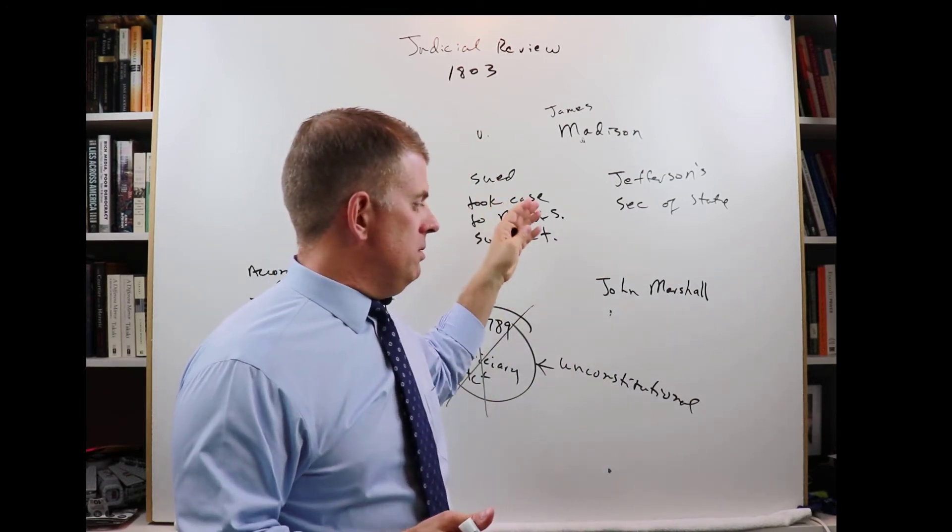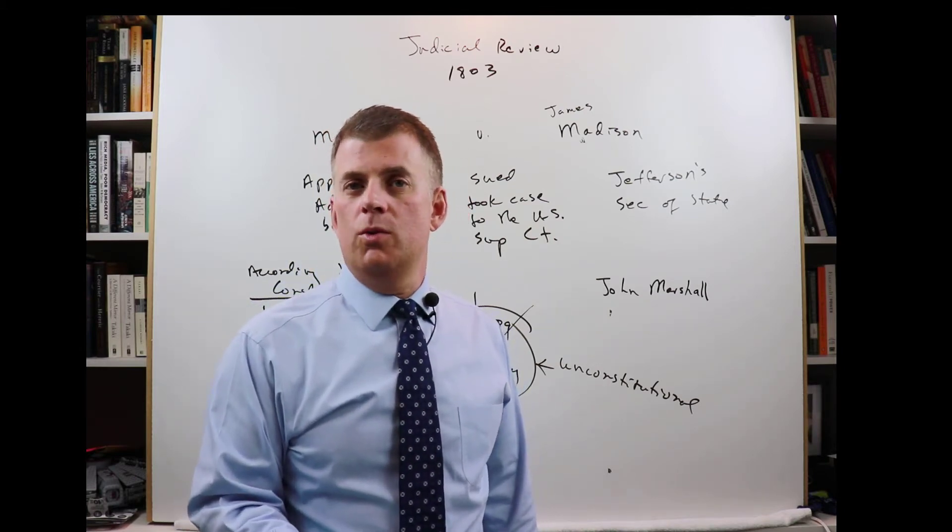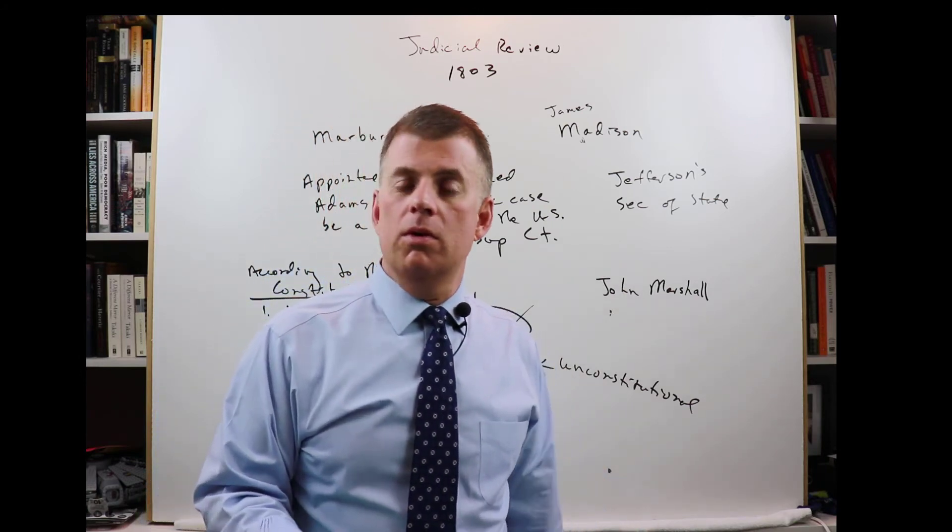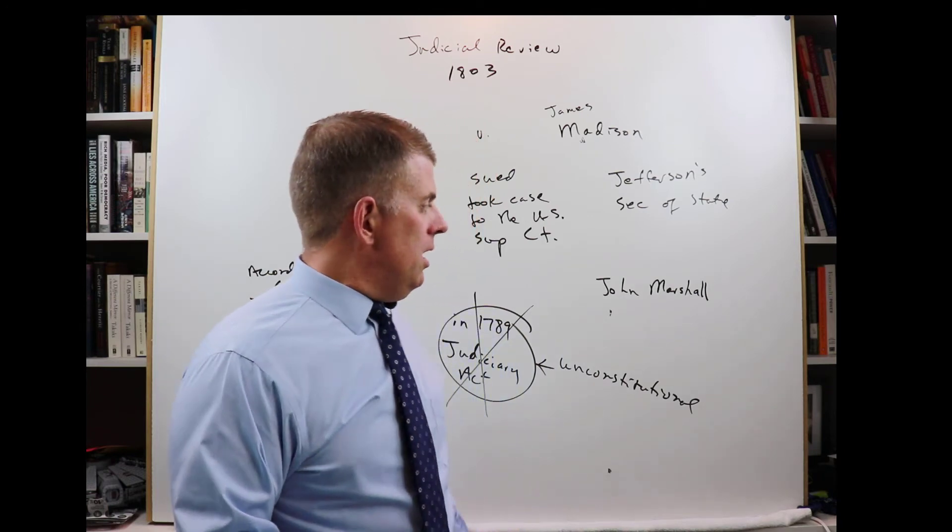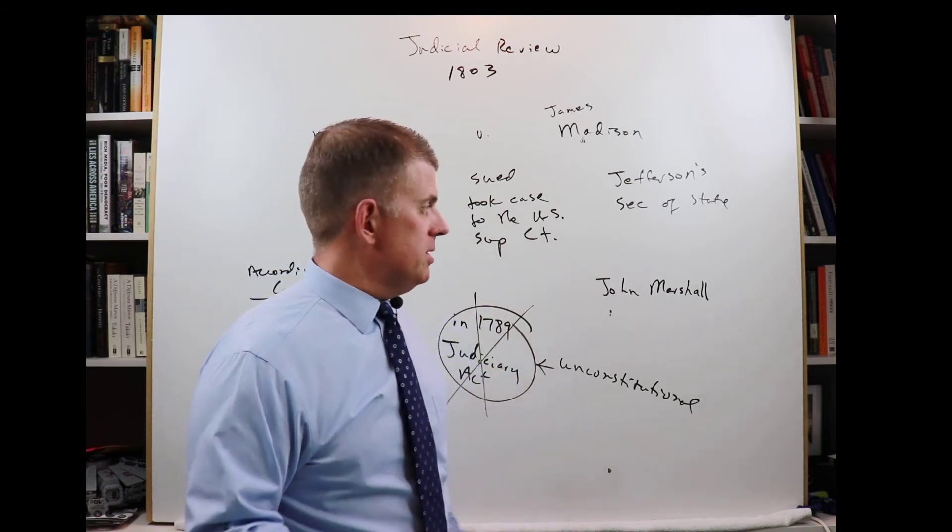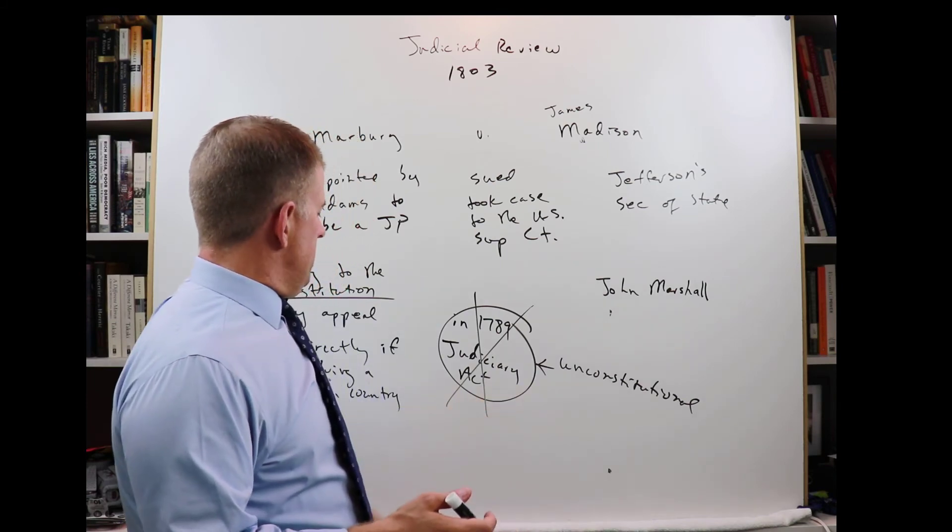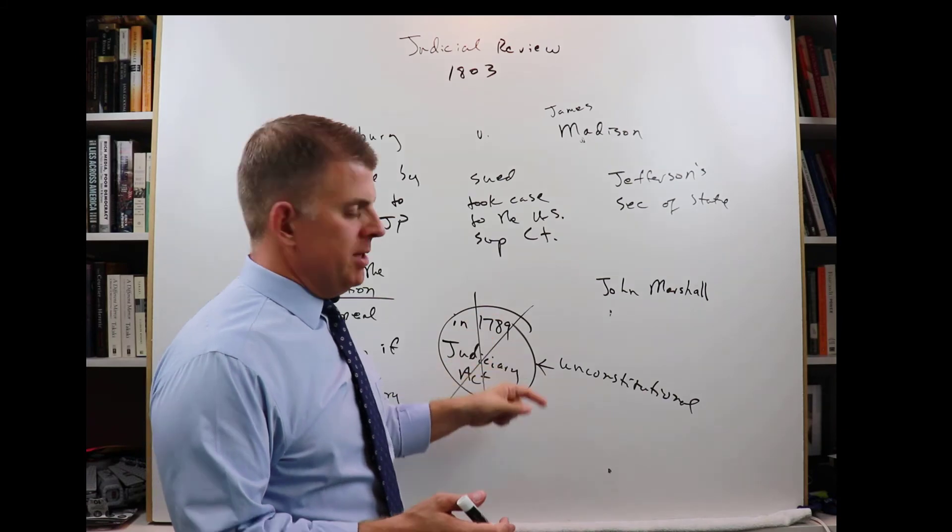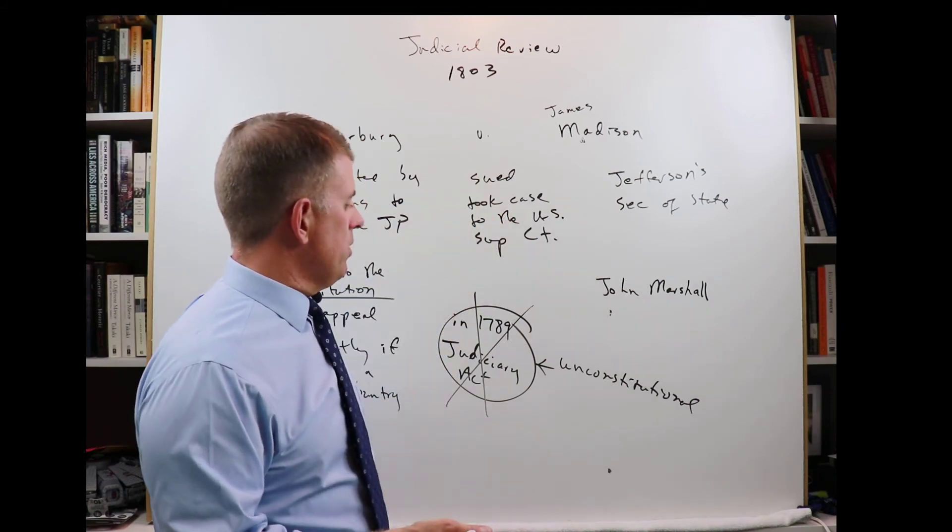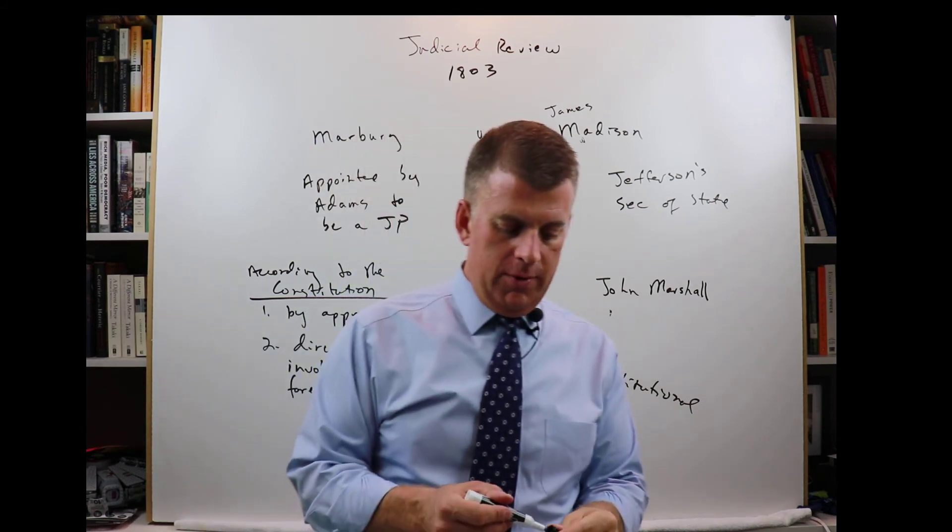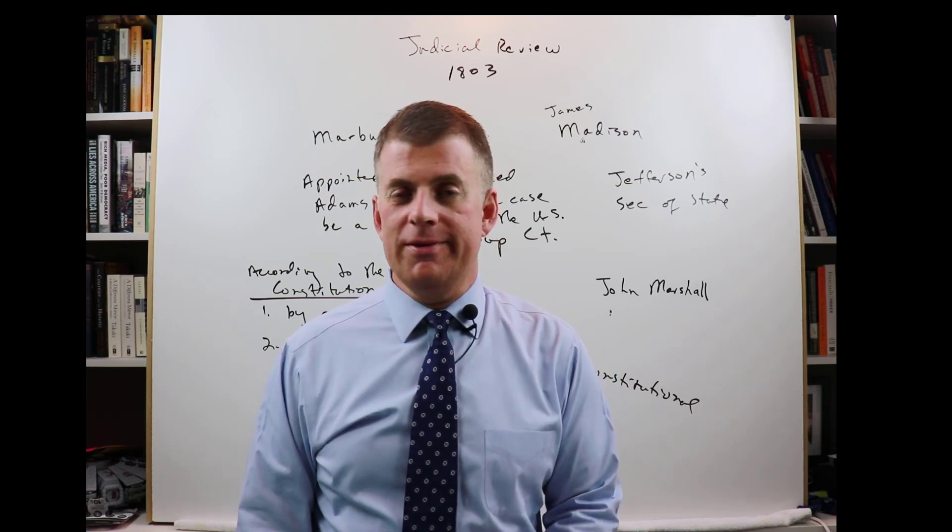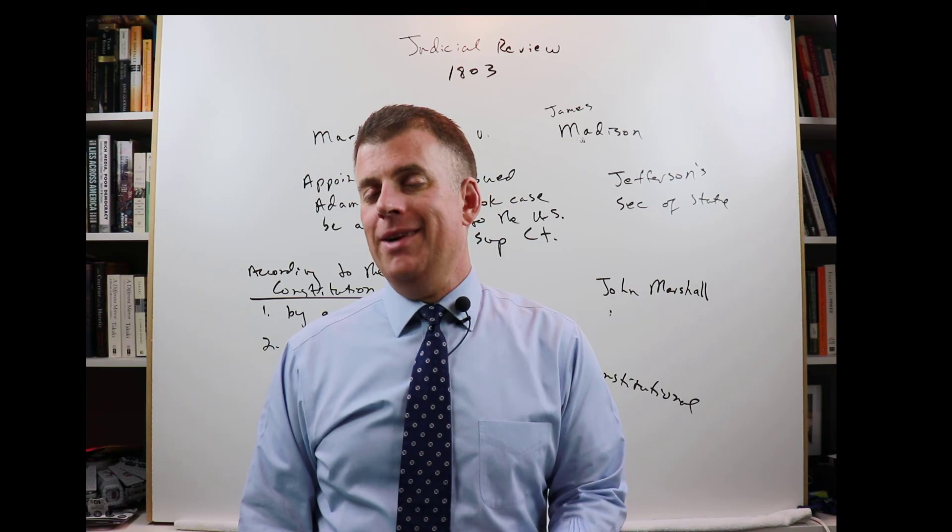So this is where judicial review came from. Before this, the Supreme Court had not exercised its power to call, to label laws, or later on it could be executive actions, unconstitutional. But this is where it came from. And since then, the Supreme Court's been doing it ever since. That's a large part of what it does. It examines laws or things like that that are brought in front of them via cases, via court cases. So this is where judicial review comes from. It is the biggest check for the judicial branch, and it's not in the Constitution, which I think is really fascinating. Don't know if you're going to get asked about it, but I do think it's important to know.